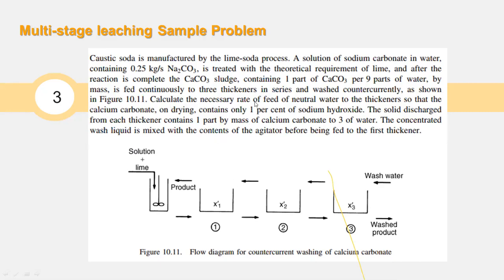We need to calculate the necessary rate of feed of neutral wash water — water not containing anything except water — to the thickeners, so that the calcium carbonate in underflow 3 will only contain 1% sodium hydroxide after drying. The solid discharge from each thickener contains one part by mass of calcium carbonate to three parts of water.